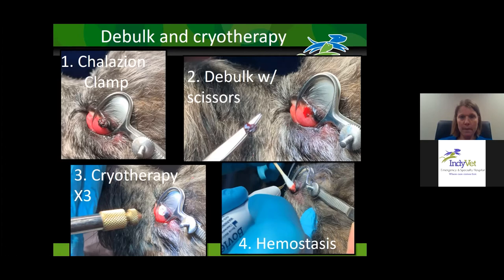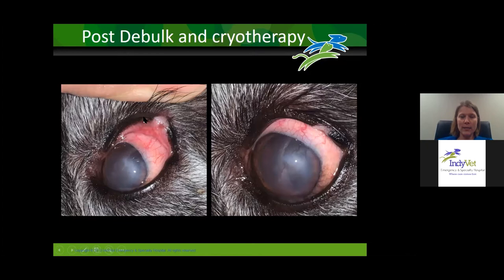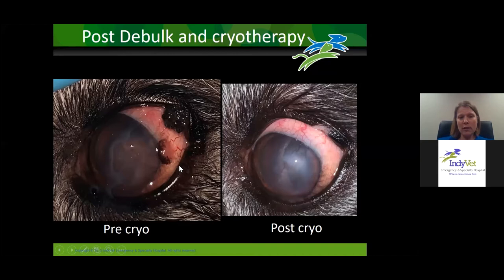Here's an example of a patient who had an eyelid mass — this is a couple of weeks post debulk and cryotherapy. You can see there's a little erosion here, and this area has depigmented, as I explained happens with cryotherapy. Within a few months this area will be repigmented. This is what the eye looked like prior to cryotherapy. This dog also had a conjunctival mass which I froze after removal, and a corneal ulcer, so I did a superficial keratectomy on this patient as well. The patient was doing much better two weeks after cryotherapy.